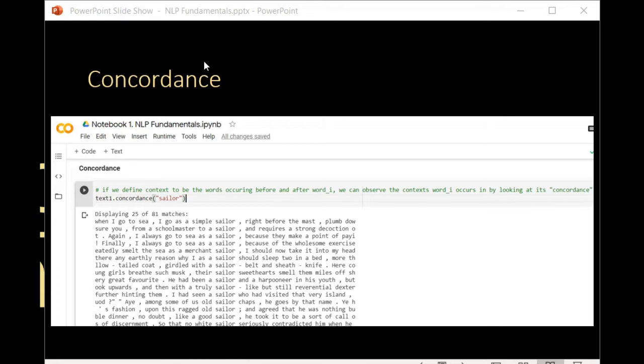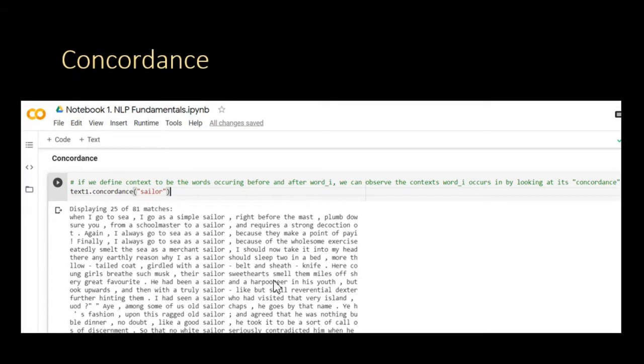Now, if we define the context of a word to be the word occurring immediately before and after it, we can use the concordance method to retrieve the context associated with the word. Here, for example, you see all the context associated with the word sailor.